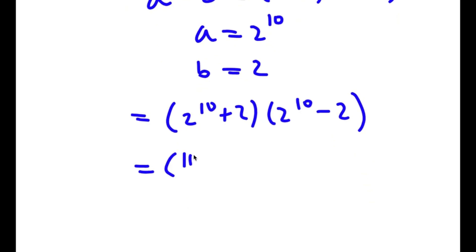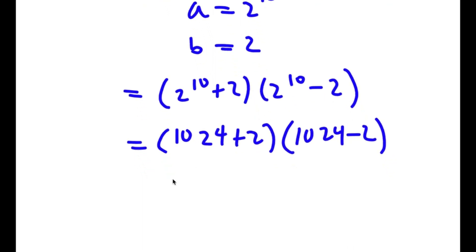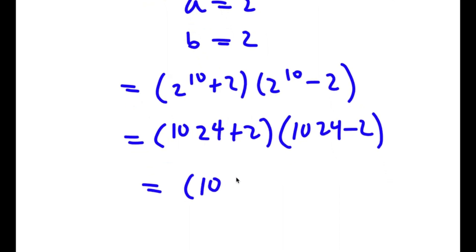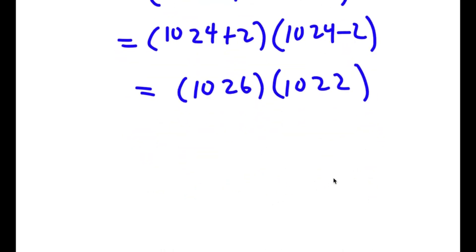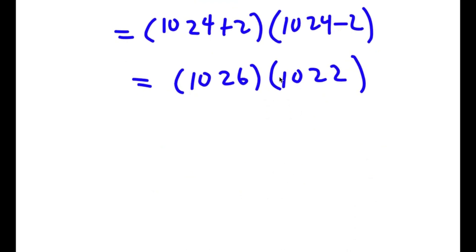Now 2 to the power of 10 is 1024, so I have 1024 plus 2 times 1024 minus 2. 1024 plus 2 is 1026, times 1024 minus 2 which is 1022. So now we have 1026 times 1022. If we try to multiply these terms as is, it's going to take really long and be very easy to make mistakes. So an easier way is to break them down.